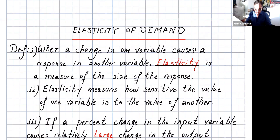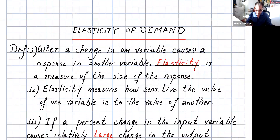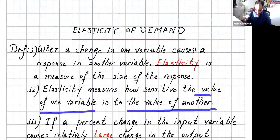Now let's talk about elasticity of demand. When a change in one variable causes a response in another variable, that's called elasticity. Elasticity is the measure of the size of the response from one variable to another. The variables can be demand and price — when you change the price, the demand can go up or down, and this affects the revenue of the company. Elasticity measures how sensitive the value of one variable is to another.